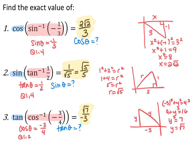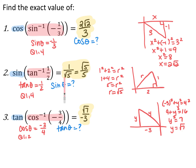For number two, sine of the tangent inverse of one-half: the inside means tangent of some angle equals one-half, which is y over x in quadrants one and four. The outside asks for the sine of that angle. I draw the triangle in quadrant one because it's a positive tangent: y is one, x is two. By the Pythagorean theorem, r is the square root of five. Sine is y over r, so I get one over root five, or root five over five.